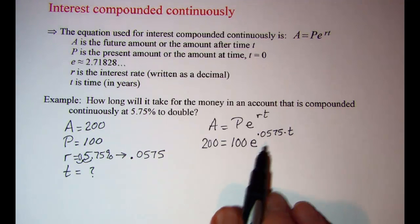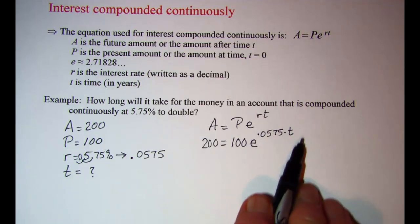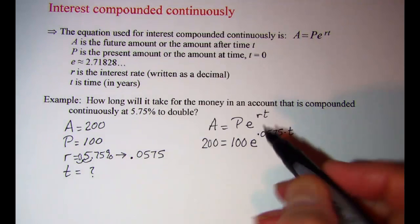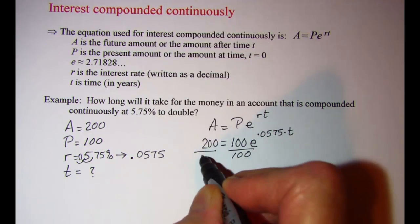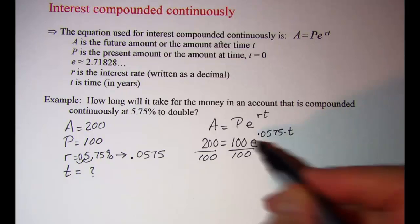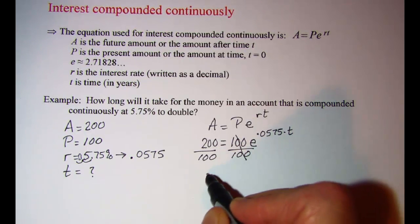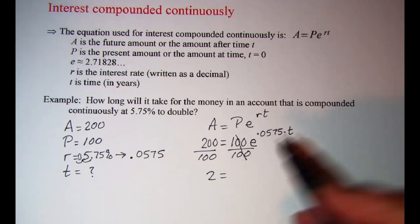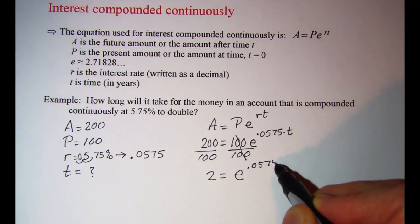So since our variable is in the exponent, we need to isolate this factor that contains that variable. So let's divide by 100 on both sides. These will cancel, and 200 divided by 100 is 2. So on the right side, I now have E to the 0.0575 T.